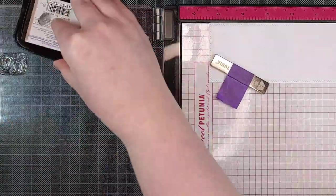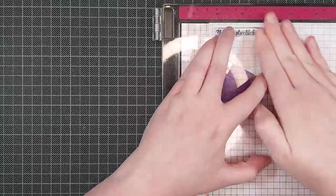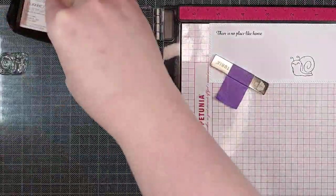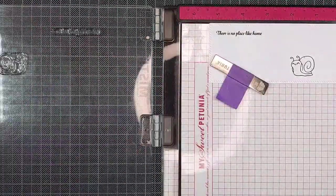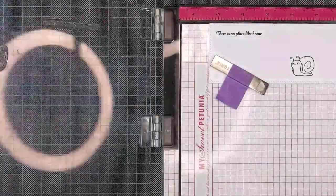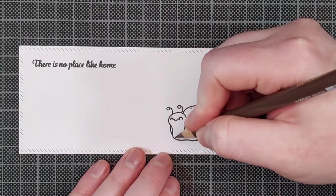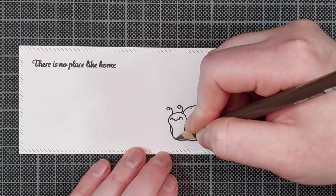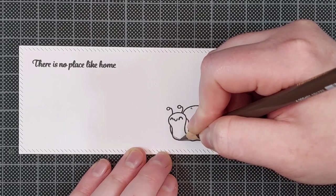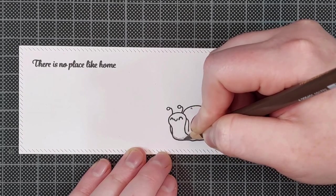I'm stamping this in Memento Tuxedo Black ink and I'm stamping it three times to intensify that black. This panel is 1/8 of an inch shorter than A2 card so I'll be trimming 1/8 of an inch off of the width and of the length of the card.